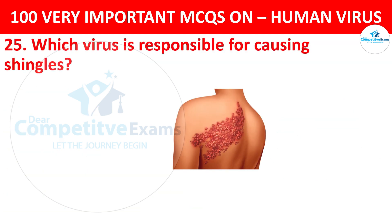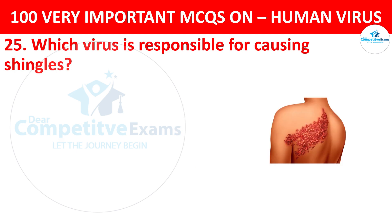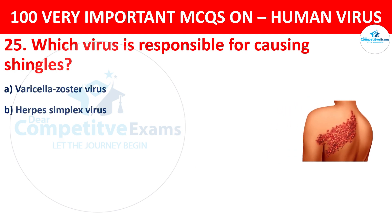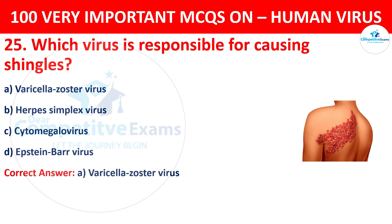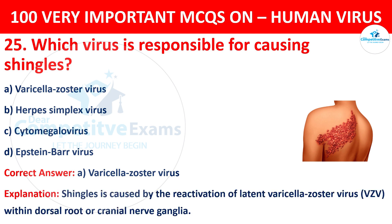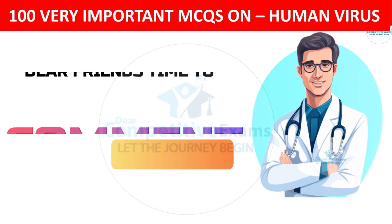Question 25. Which virus is responsible for causing shingles? Your options are Varicella Zoster virus, Herpes simplex virus, Cytomegalovirus, or Epstein-Barr virus. The correct answer is A, that is Varicella Zoster virus. Shingles is caused by the reactivation of latent Varicella Zoster virus within dorsal root or cranial nerve ganglia.